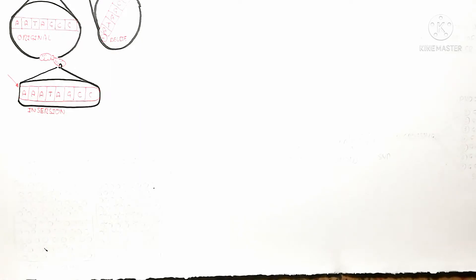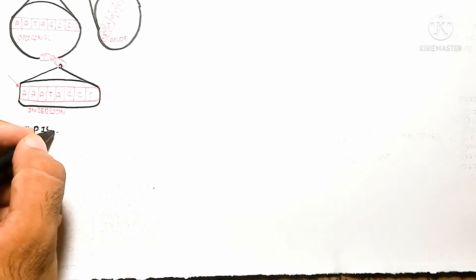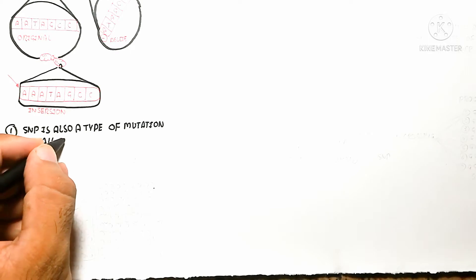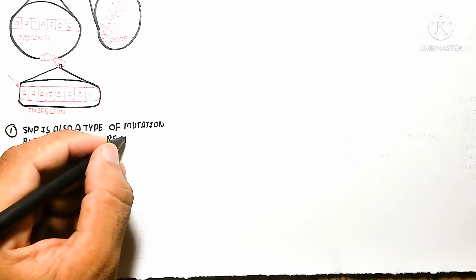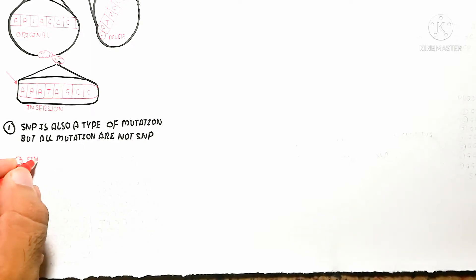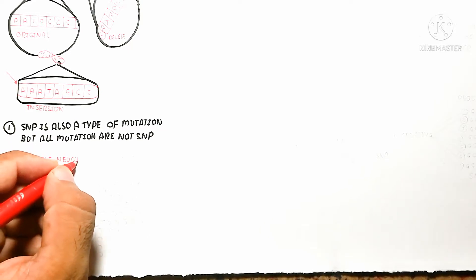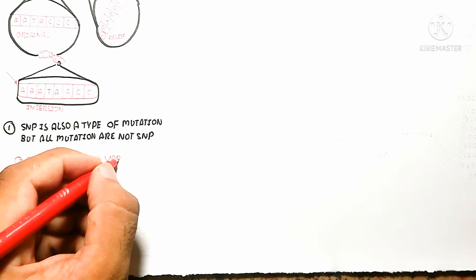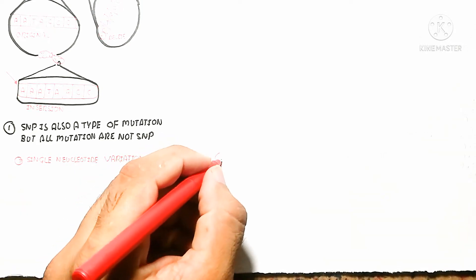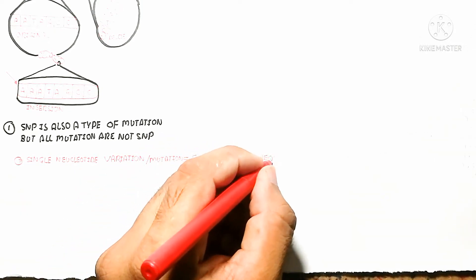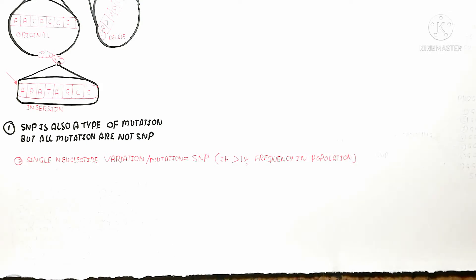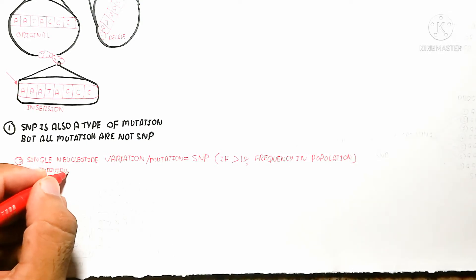This type of mutation is not SNP because it occurs in less than one percent of individuals in the population. SNP requires a frequency of more than one percent in the population. So SNP is also a type of mutation, but not all mutations are SNPs. The key distinction is that SNP occurs in more than one person per population, while a simple mutation occurs in less than one percent.